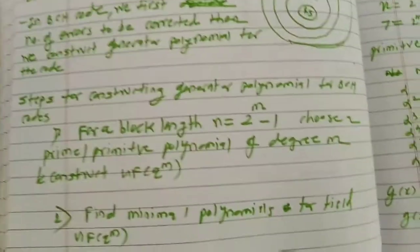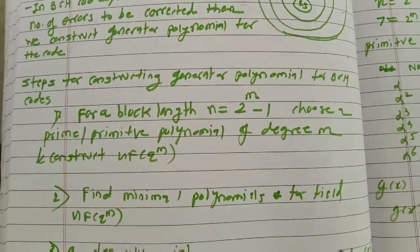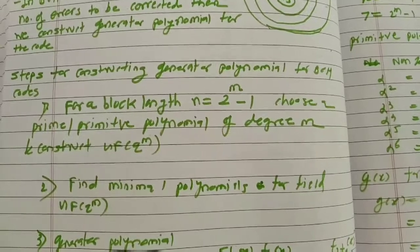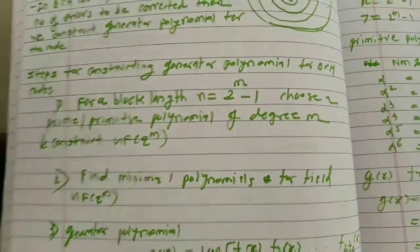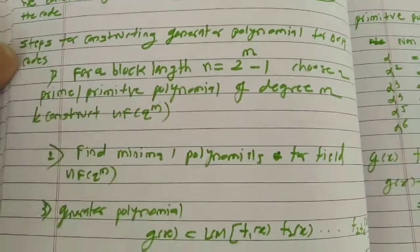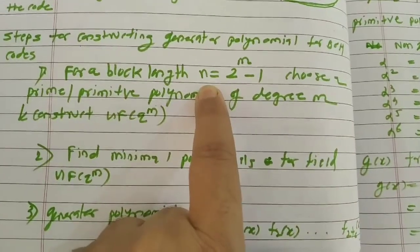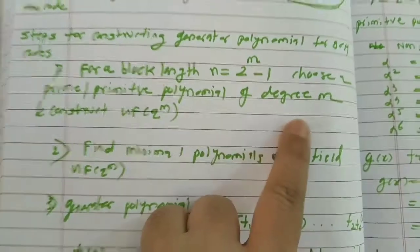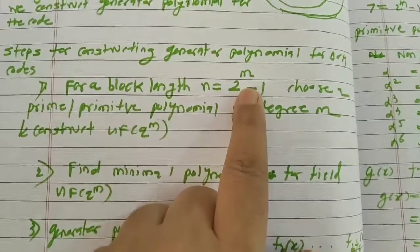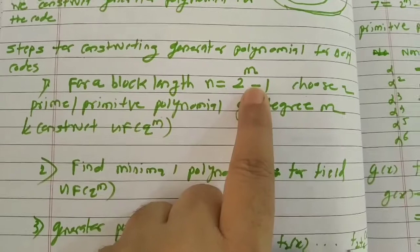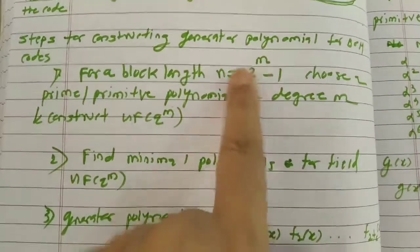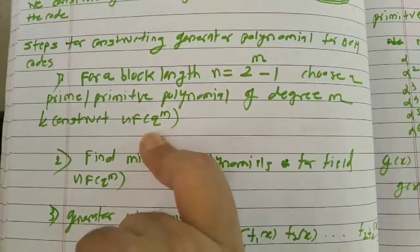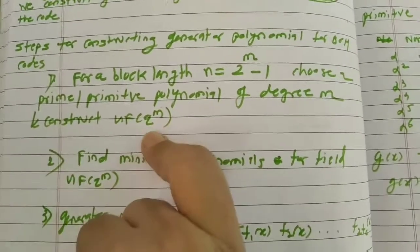What are the steps? In your exam they will ask you to obtain the generator polynomial and they give you the block length n and number of errors to be corrected, TC. They will give you n, which is related to m as n = 2^m - 1. This m is the degree of the primitive polynomial, meaning you have to select the primitive polynomial of degree m and use the elements from the extension field GF(q^m).